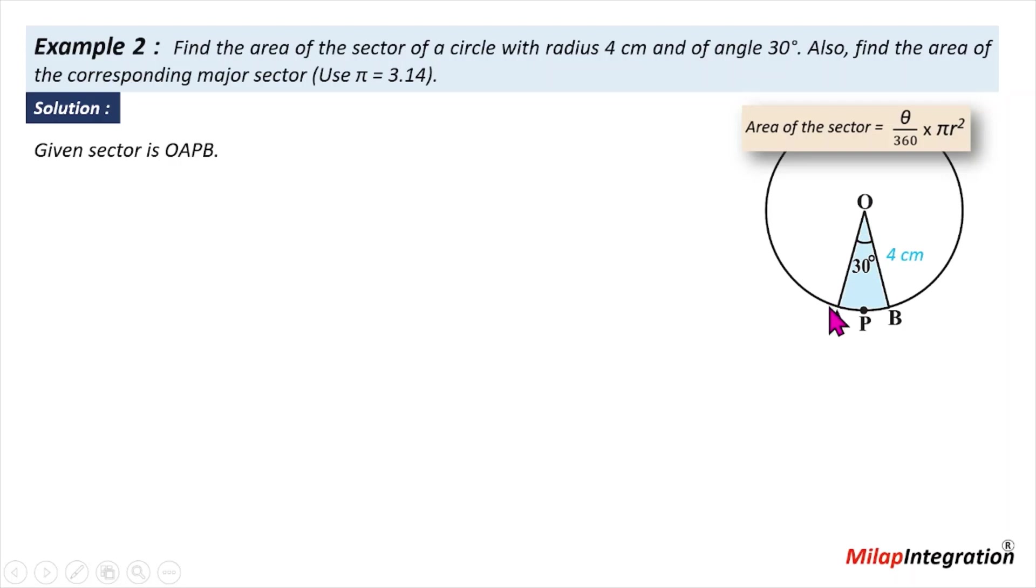We will come from A, A, P, B, and B, and then we will come back. That means we are talking about this blue area. So it is helpful to put an additional point here. So given sector is O, A, P, B.